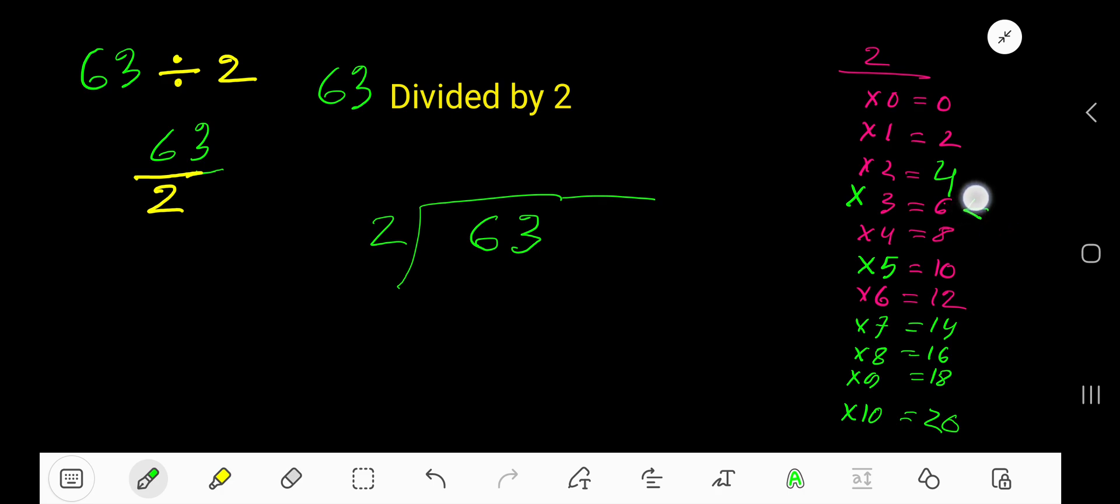2 goes into 6 how many times? 3 times, write 3. Now multiply. 3 times 2 equals 6.